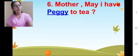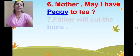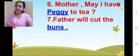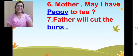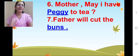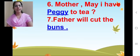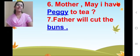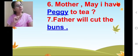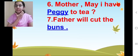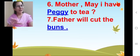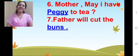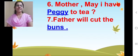Now move on to our seventh one. 'Father will cut the ___.' Buns. Father will cut the buns. Spelling: B-U-N-S. And after that, keep a full stop there — full stop means the sentence is over. Done. Shall we move on?